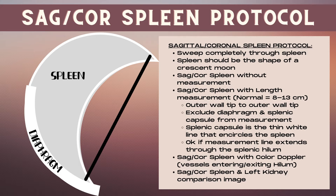A normal spleen measures from 8 to 13 centimeters. Measure from the outer wall tip of the spleen to the outer wall tip, and exclude the diaphragm and the splenic capsule from the measurement. The splenic capsule is the thin white line that encircles the spleen, and the diaphragm is located along the posterior border of the spleen — it's a much thicker bright white line.